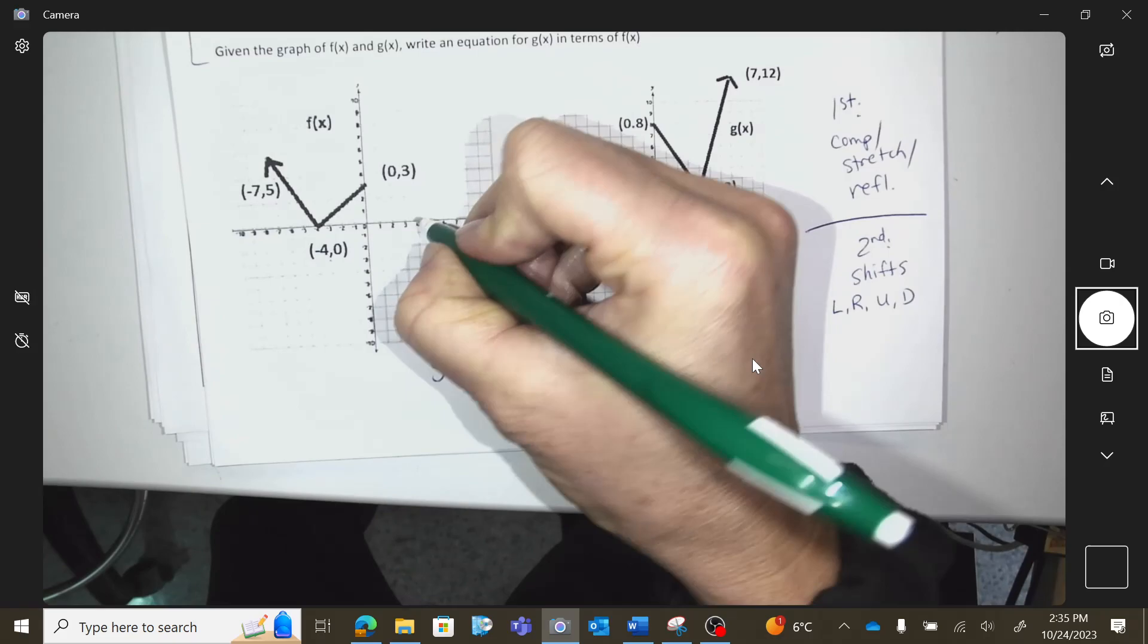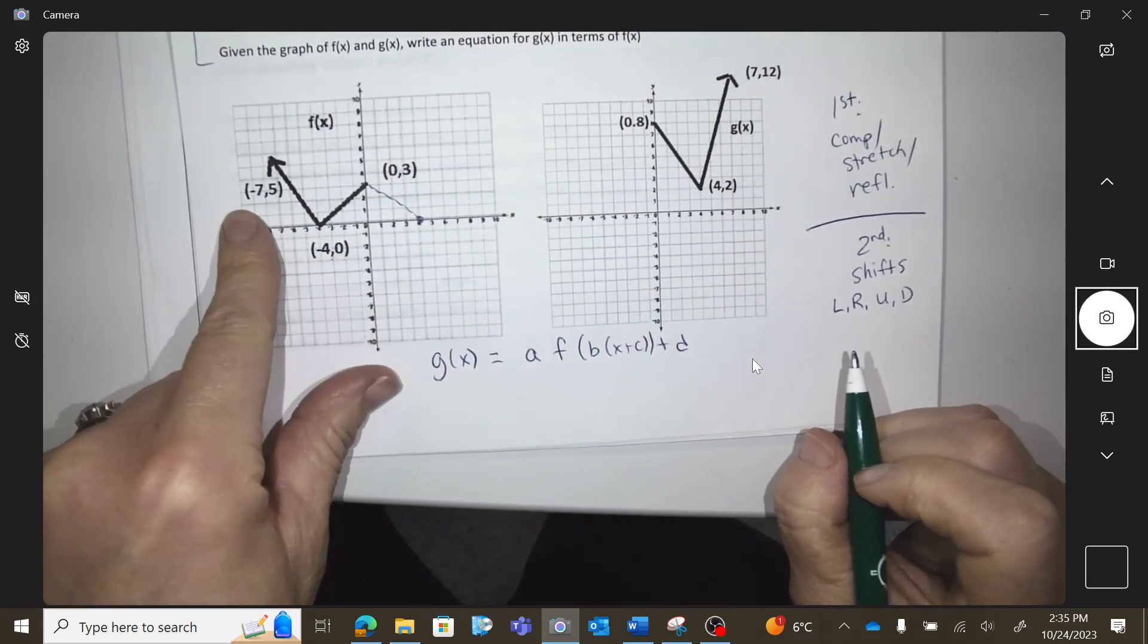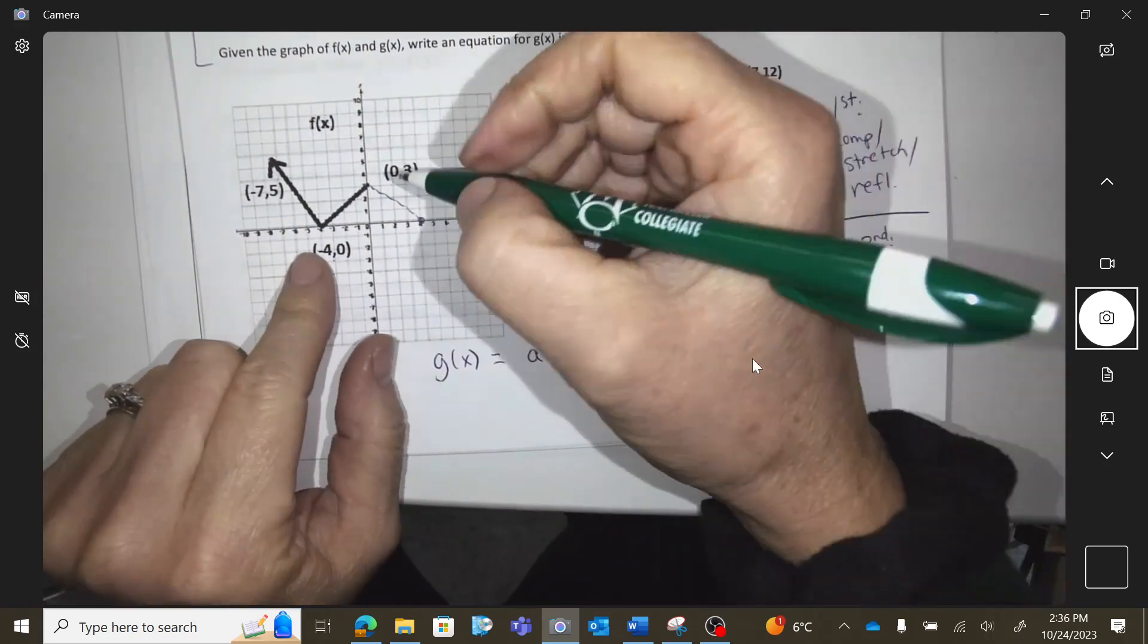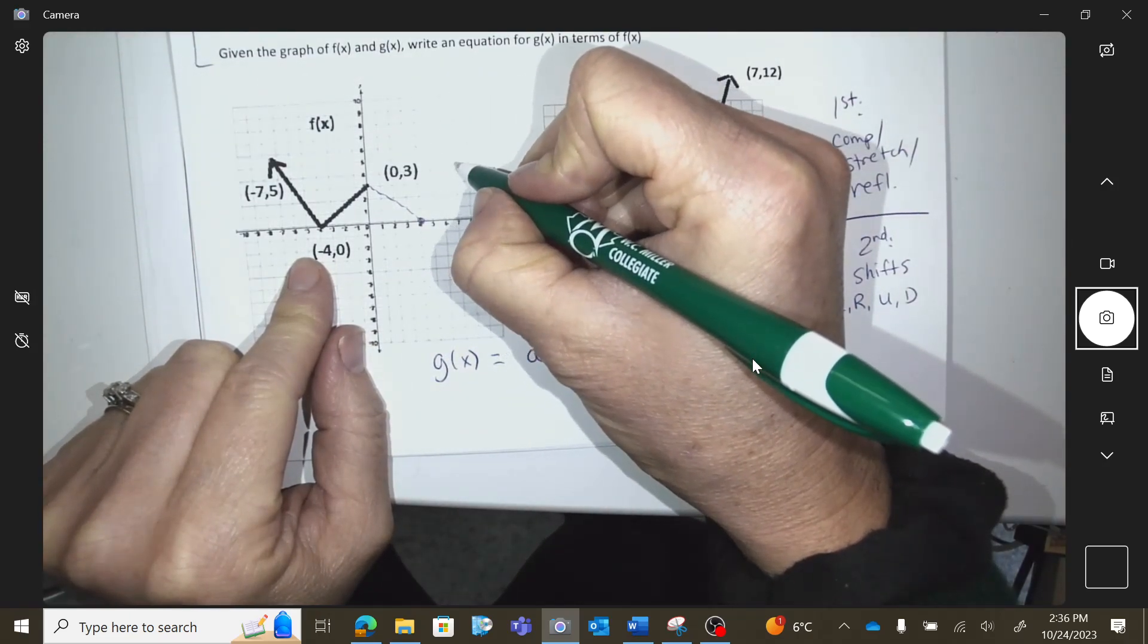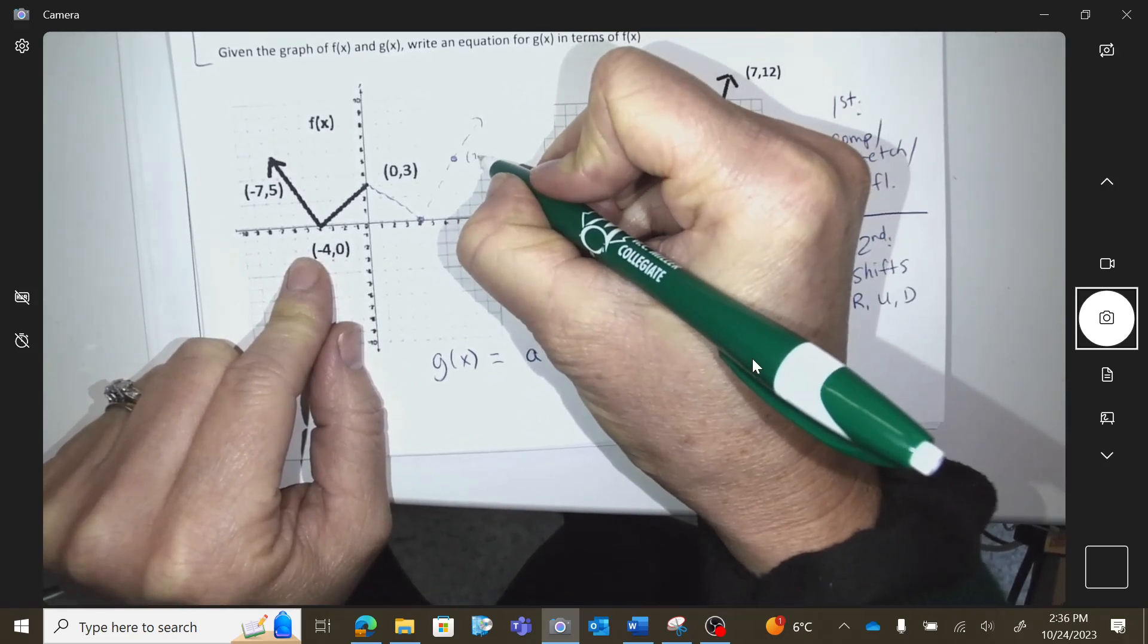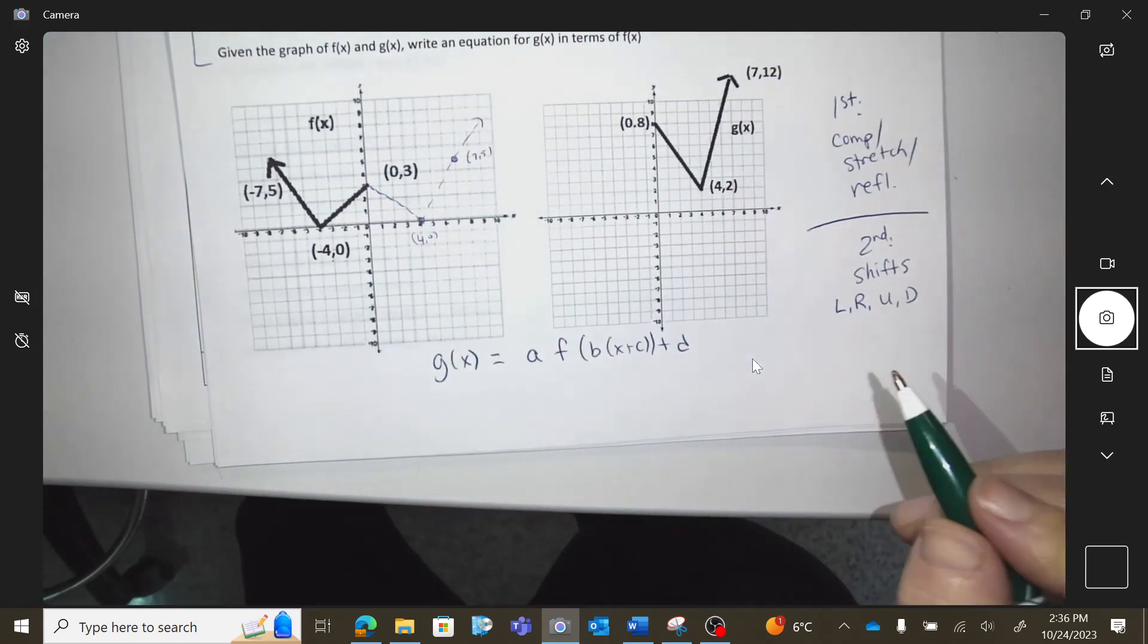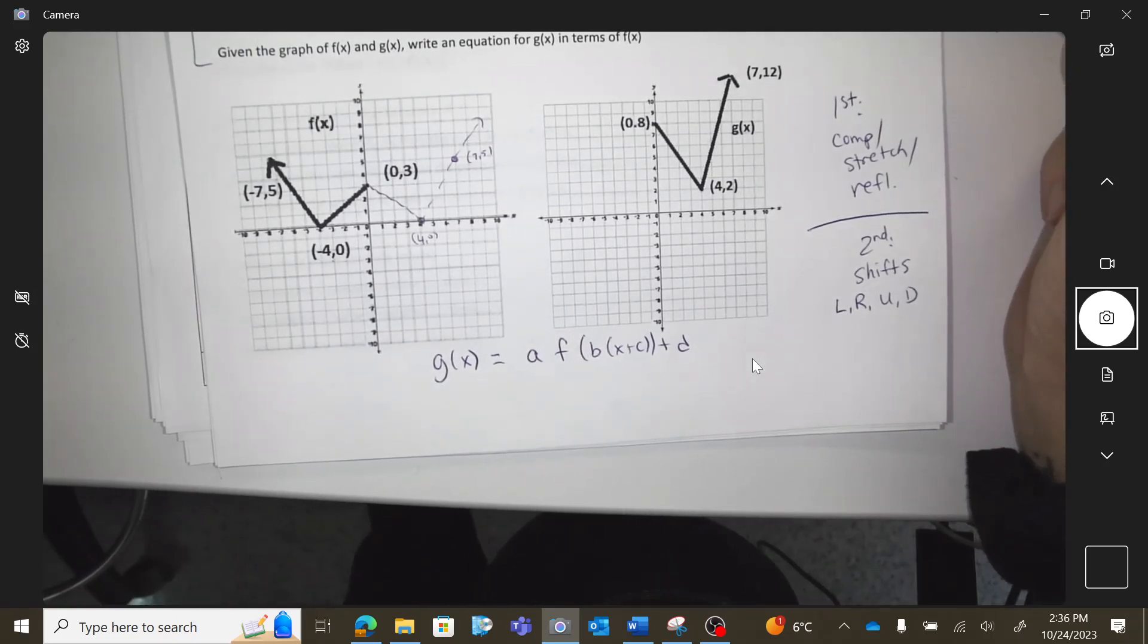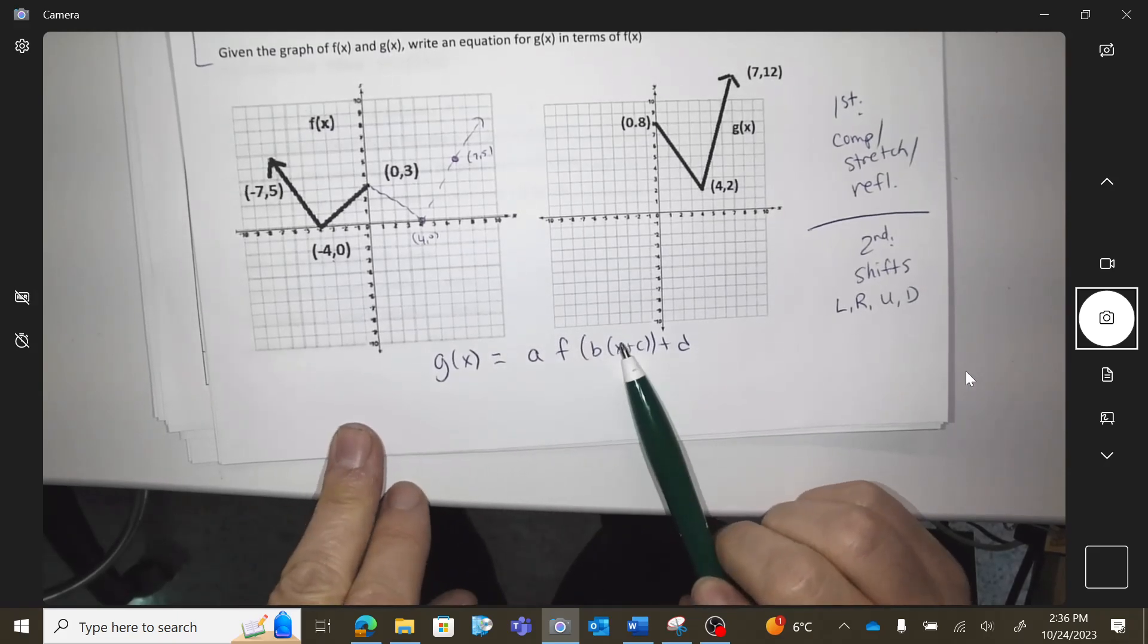It would go over here to four zero. And where would negative seven comma five flip over the axis to? Seven comma five. Okay, so I reflected them.